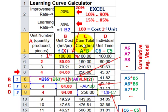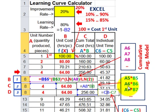For column C, the formula is equal sign A8 times B8 — you're just taking the quantity in column A times whatever result you have in column B from your function. You index that as A5 times B5, A6 times B6, A7 times B7 for each of those rows. That takes care of column C, the cumulative total.